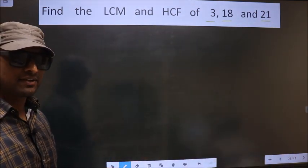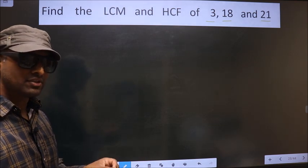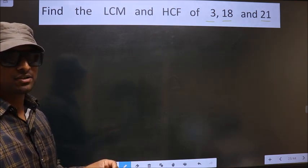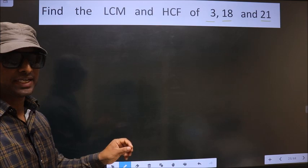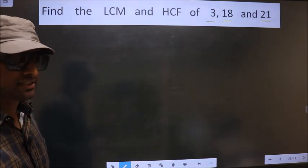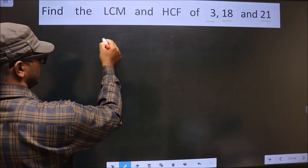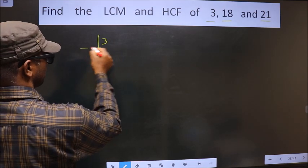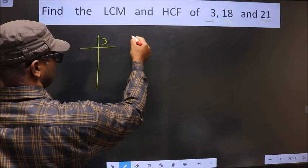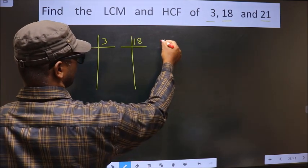To find the HCF and LCM, first we should do the prime factorization of each number separately. That is 3, 18, 21.